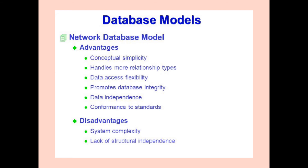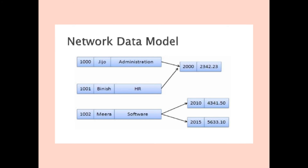The network data model is powerful but complicated. A network database is a collection of nodes and links such that any node can be linked to any other, perhaps multiple times. The links form threads by which we can quickly answer any query. The network data model looks very similar to a tree structure, except that a dependent node called a child may have more than one parent node. The main disadvantage of the network model is its complexity.